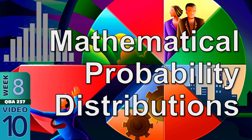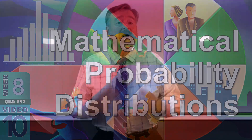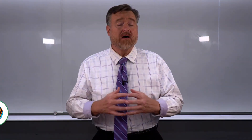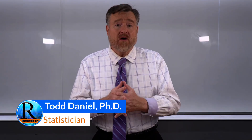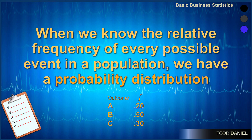We can think of all possible outcomes in an event as being a population. When we know the relative frequency of every event in that population, we can create a relative frequency table, which we can also call a probability distribution.